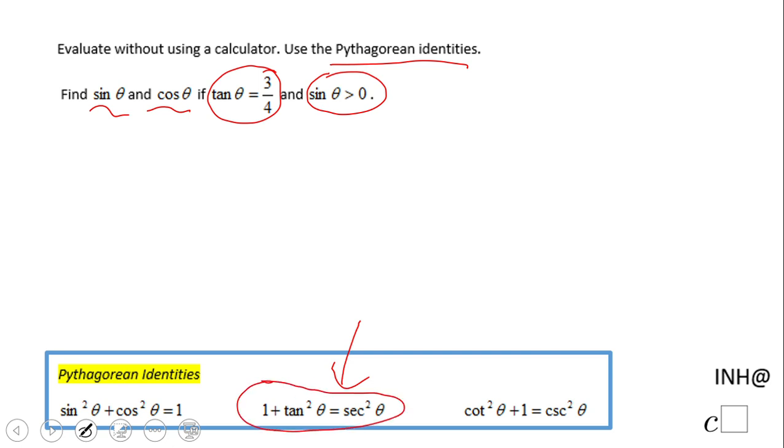And the one I'm gonna really start with is this one: 1 plus tangent squared equals secant squared. Meaning we're gonna plug in tangent, which is three-fourths, and we're gonna solve for secant squared.